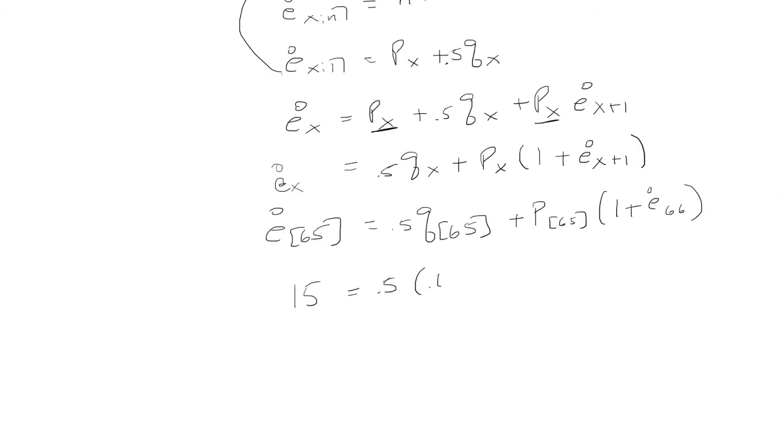So it's 0.5 times 0.04. Now the probability of surviving the select age 65 is a complement of 0.04, it's 0.96, and that's 1 plus and then we'll just leave E66 alone so we can solve for it. And get that it's 14.60417.